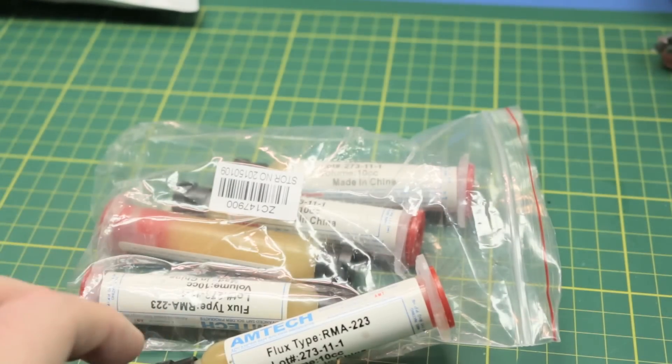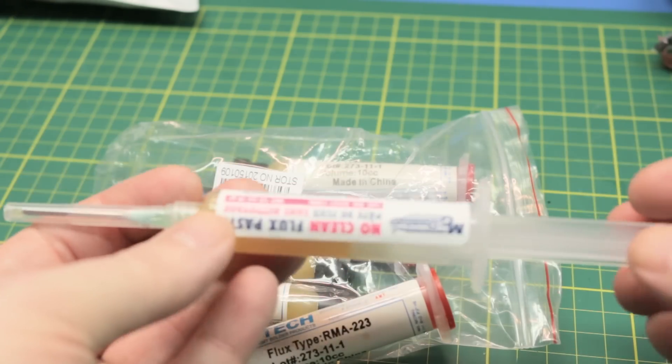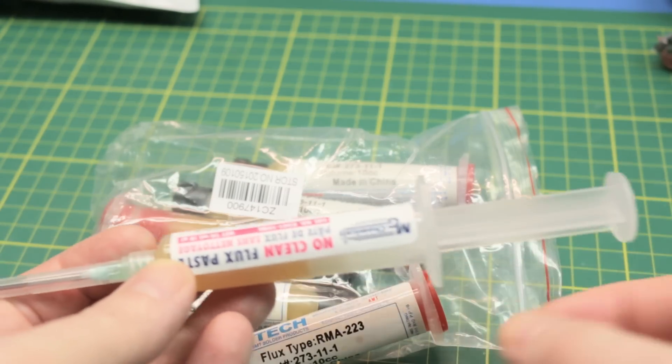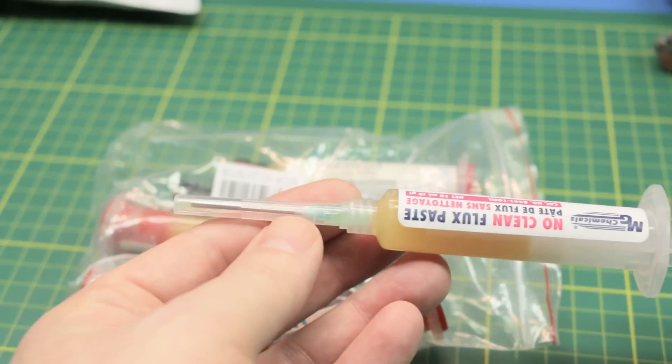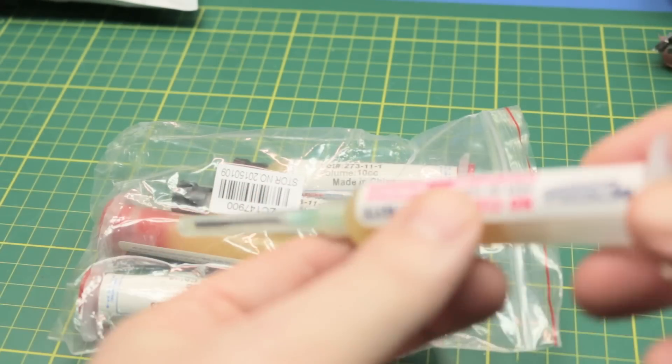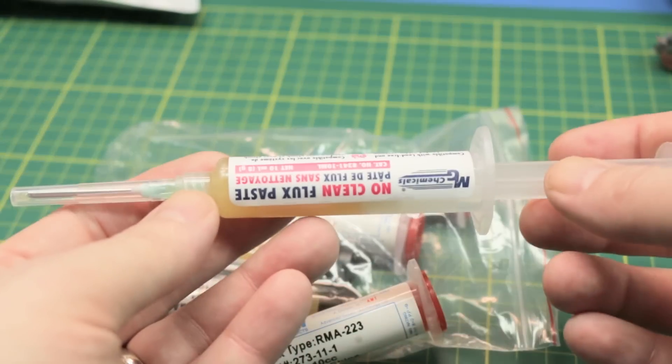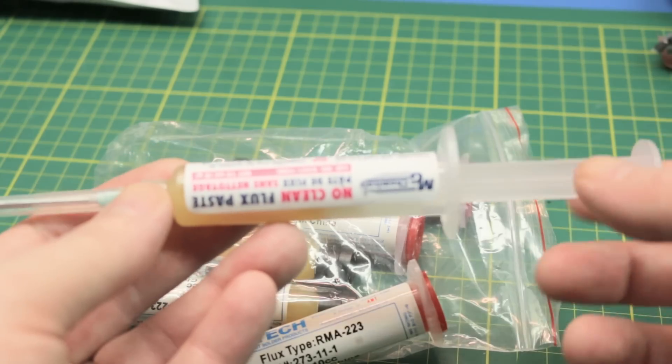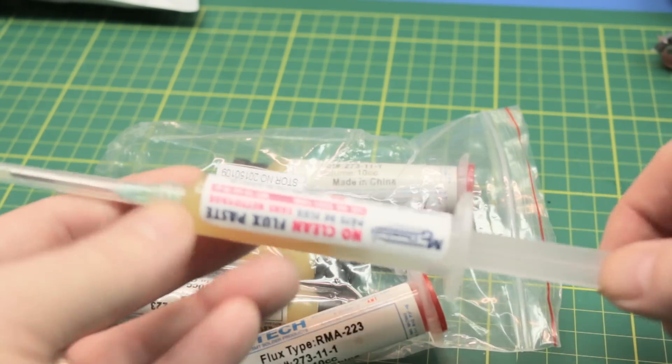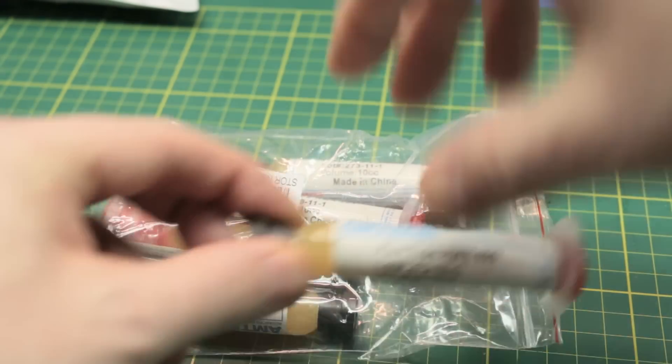But you just basically hose the circuit board in this flux and you just use a syringe. They don't come with that. You have to have your own syringe end. And you just hose the area you're working on when you're doing any soldering. Pretty much a crucial item for surface mount soldering. You pretty much can't get away without it.